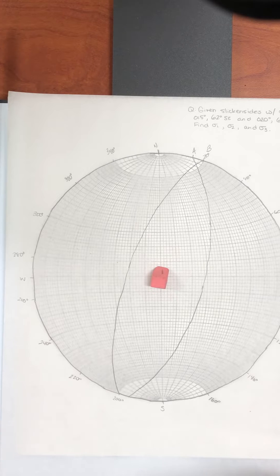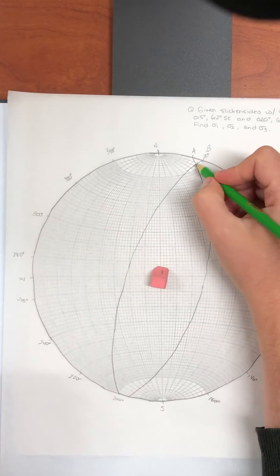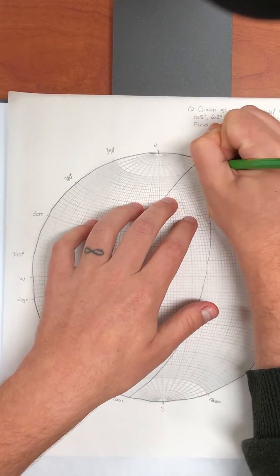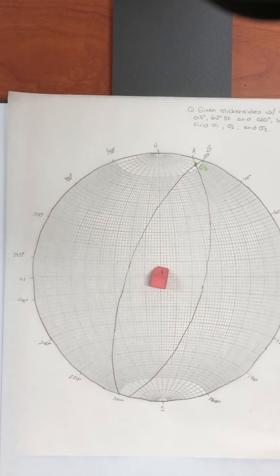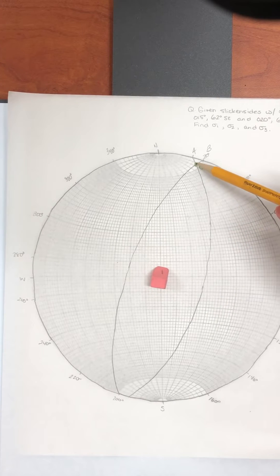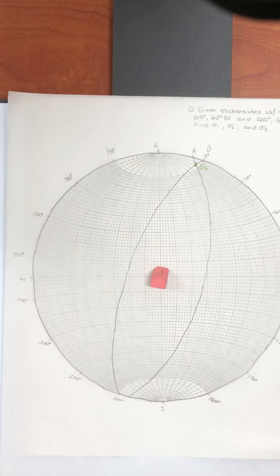Okay. Now in the picture, we said that sigma two was in the plane of the faults. And there's only one point on the stereo net that's going to describe a line in the plane of those two faults. And it's their intersection point. So that intersection point is sigma two. If we wanted to, we could read off the strike and dip of that point right now. And remember, because it's a point on the stereo net in real life, it's a line.